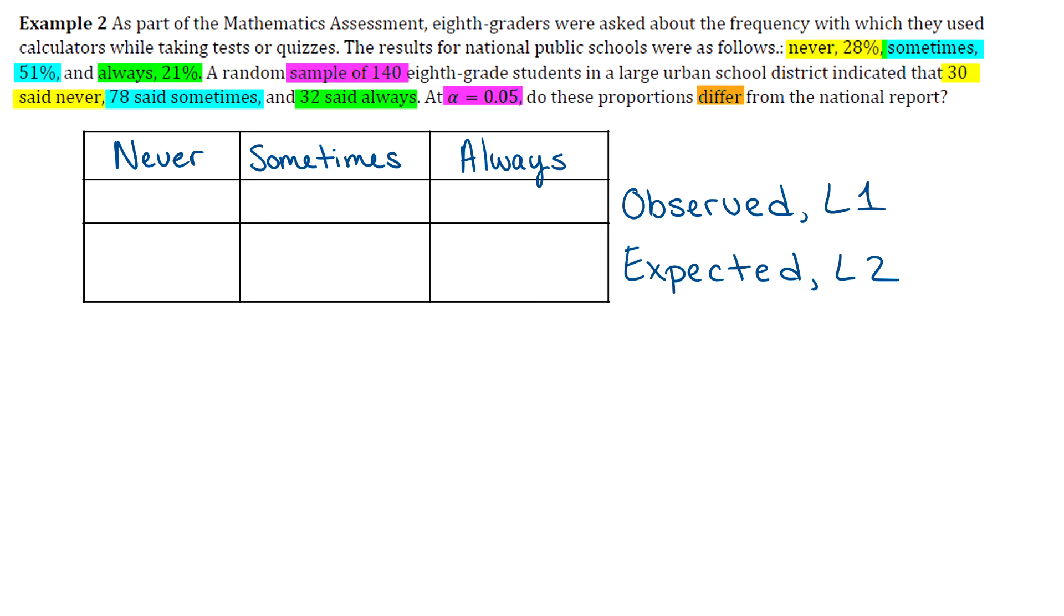So the observed frequencies are the ones that come from that sample. So it said that from the random sample of 140 eighth grade students, 30 said never, 78 said sometimes, and 32 said always.